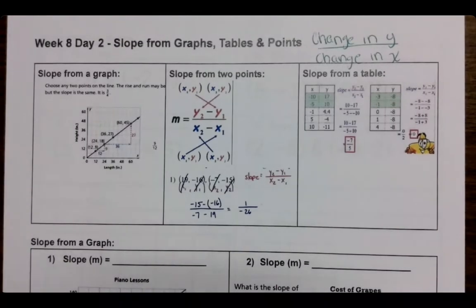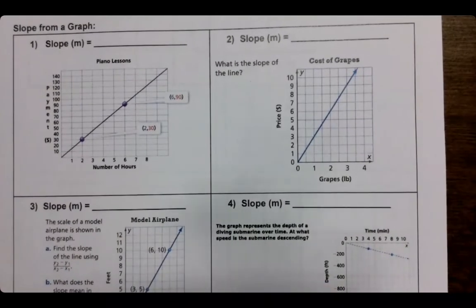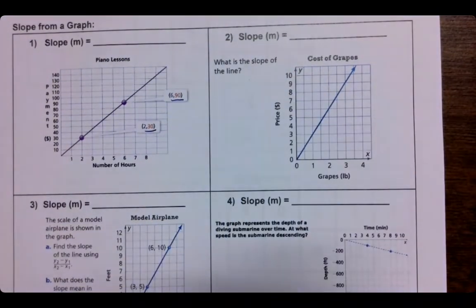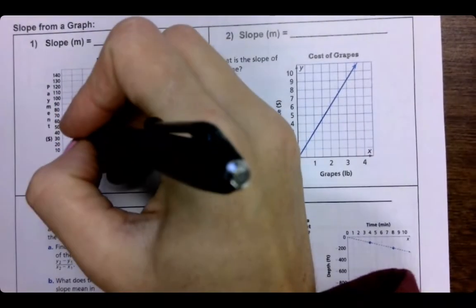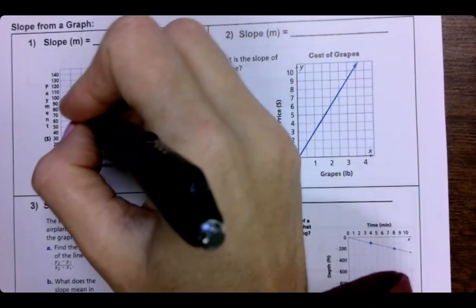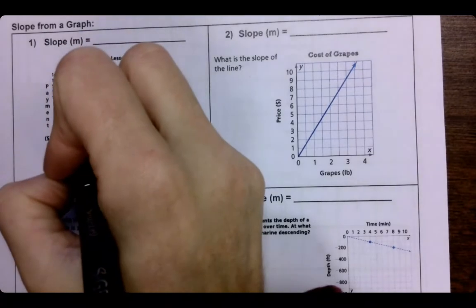And then using that slope from two points piece is going to be how we do it from a table. So those are three examples of what we're doing today, but we are going to start with slope from a graph. So again, they give you the points, which is kind of nice, but I'm going to connect these two dots, and then I'm going to count boxes.